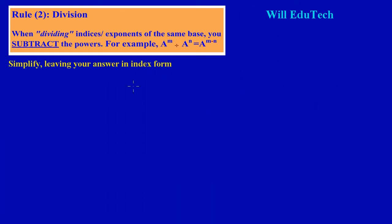It's a pleasure having you again. In this video we're going to be looking at rule number two when working with exponents or indices, and that rule has to do with division. In the previous video we looked at the first rule dealing with multiplication. Now here it states: when dividing indices or exponents of the same base, you subtract the powers.